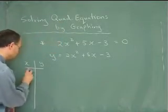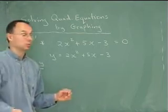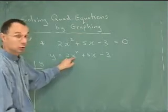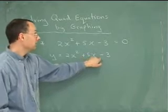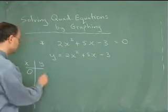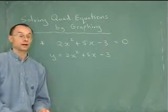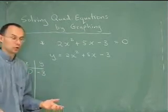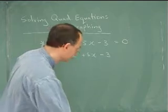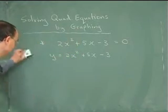For example, you could plug in 0, always a nice one. 2 times 0 squared plus 5 times 0 minus 3 turns out to be negative 3. So there would be one point on our graph and we would need several more. But I'm going to speed the process up by using the graphing calculator.